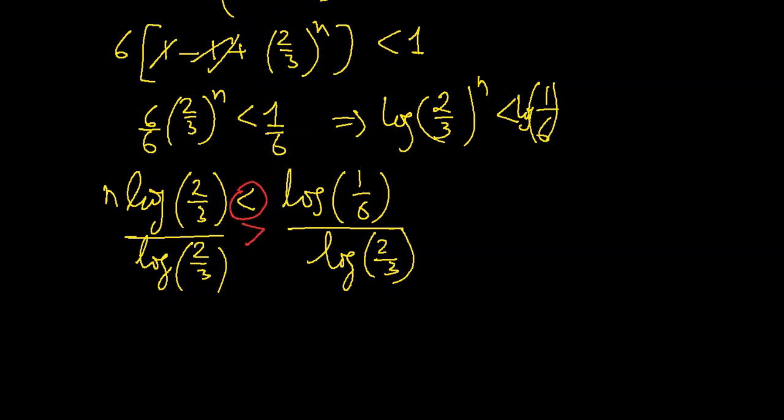Whenever we divide by a negative number in an inequality, we change the sign. So we get n is greater than log(1/6)/log(2/3). If you put these numbers in your calculator, we get 4.419.